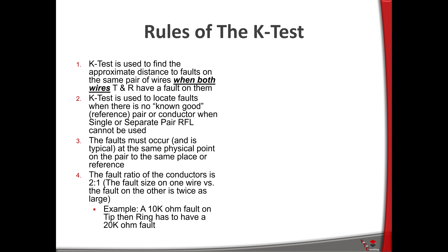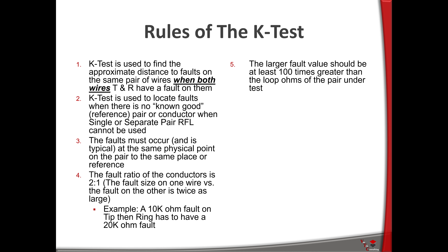The faults have to be to the same reference — tip to ground, ring to ground. You can't have tip to ground and ring going off to another pair with foreign voltage on it. The fault ratio of the conductors has to be two to one — the fault size on one wire versus the fault on the other has to have that separation. For example, a 10k ohm fault on the tip means you need a 20k ohm fault on the ring. The larger fault value should be at least 100 times greater than the loop ohms of the pair under test — so if loop ohms is 100, the larger fault should be at least 10k ohms.